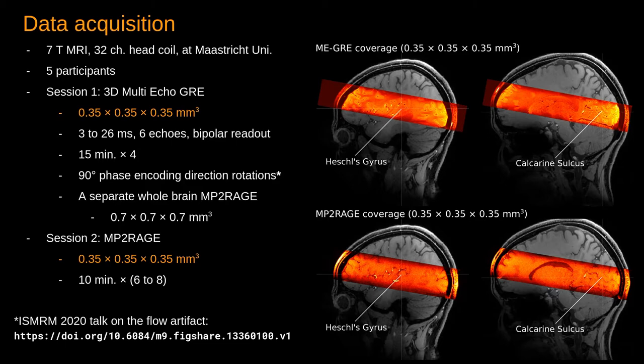Our resolution was 0.35 mm isotropic, which is less than half the thickness of a credit card. We had six echoes ranging from 3 to 26 milliseconds. Each run was 15 minutes and we had four of these runs. Across each run, we employed 90-degree phase encoding direction rotations. Further work on this part was presented last year.